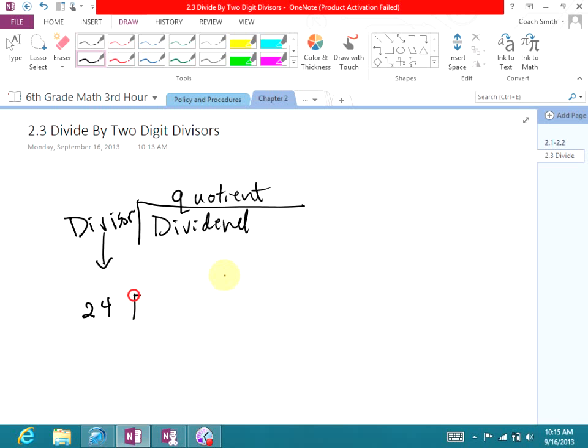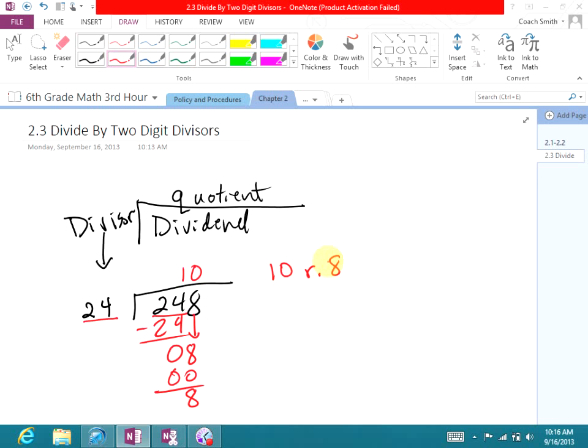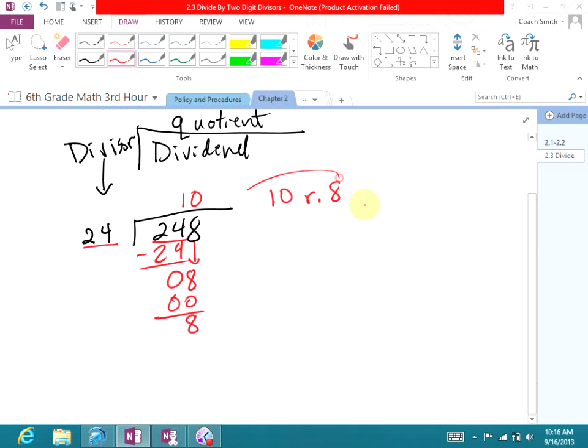24 into 248, something like that. Now in these problems you're going to have remainders. Let's look at 24 into 248. 24 goes into 24 how many times? One time. So that's 24. Subtract those, have a zero remainder, so I bring down the eight. 24 goes into eight how many times? Zero times. So I'd have a remainder of eight. So I would say 10 remainder 8.